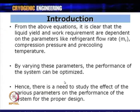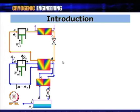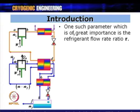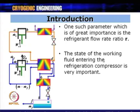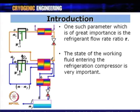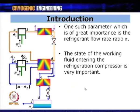One very important parameter is the refrigerant flow rate R, the ratio M-dot-R to M-dot. The state of the working fluid entering the refrigerant compressor is critical. The value of M-dot-R also determines at what state the refrigerant enters the refrigerant compressor. In a reciprocating compressor, the entry to the compressor must be in the gaseous phase, and M-dot-R must ensure this condition is satisfied.